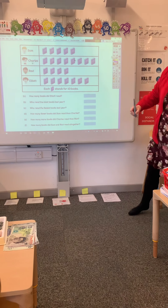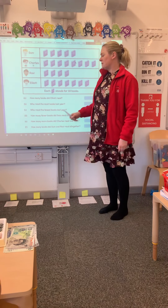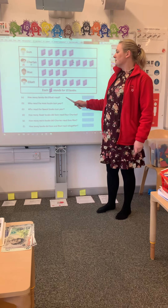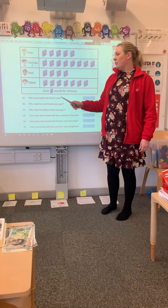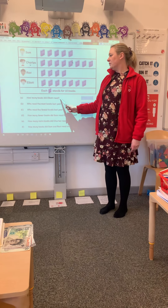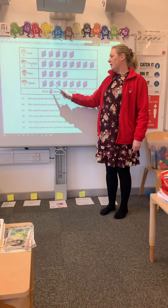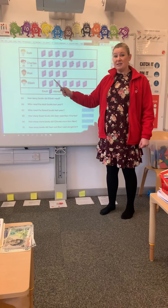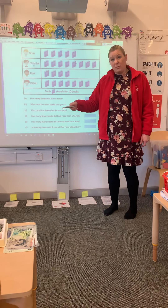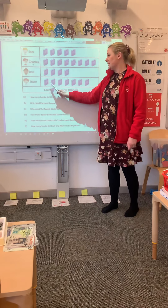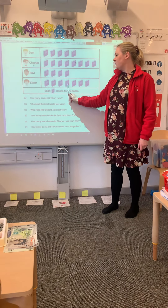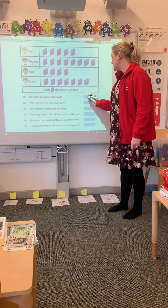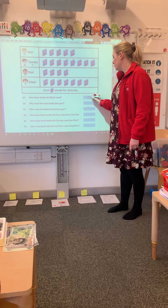Now we simply have some questions to answer. So, how many books did Elliot read? I'll give you a moment to think. Okay — I look at Elliot and count along in multiples of 10. If you know your 10 times tables, you could probably make this quicker still: 10, 20, 30, 40, 50, 60, 70. Elliot read 70 books.